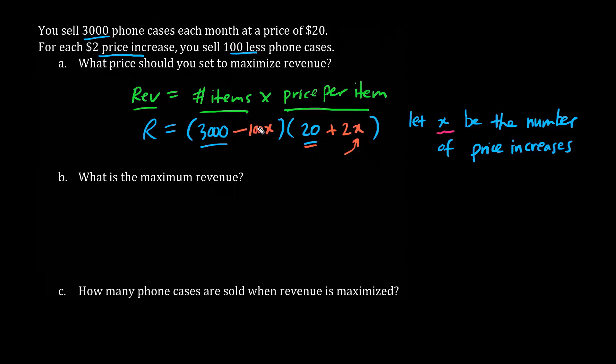If x is 0, it has no effect on the number of sales. However when x is 1, with 1 price increase, 3,000 minus 100 times 1 is 2,900. And if x is 2, we have 3,000 minus 100 times 2, which is 200, which is 2,800.